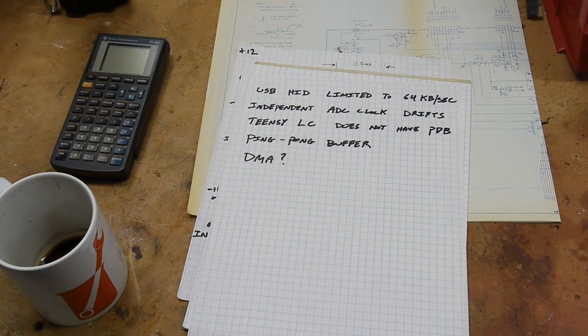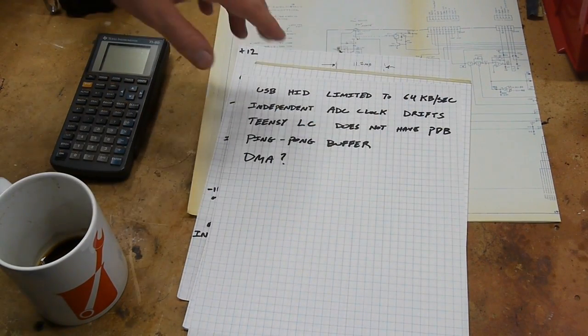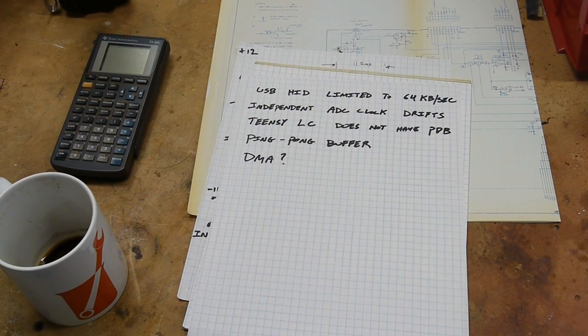But if you need something that's really deterministic, I mean really accurate, you can't trust the interrupts because there could be a delay, an undetermined delay when the interrupt fires, and that leads to variable timing. So apparently this PDB is something that you can set up in the microcontroller that really runs very deterministically and it triggers the ADC without really any code happening.